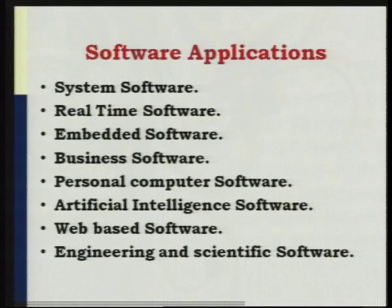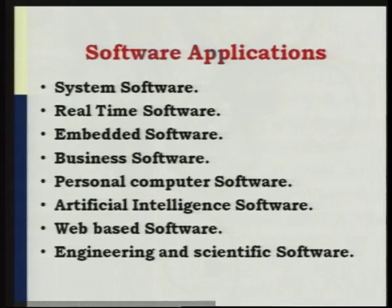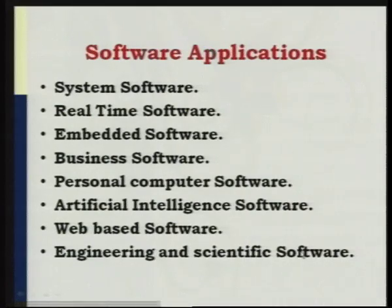Some applications of software include system software, real-time software, embedded software, business software, personal computer software, artificial intelligence software, web-based software, and engineering and scientific software. For engineering and scientific software, examples include CAD/CAM software. For artificial intelligence software, some gaming applications can be included. These are some examples of application areas where software can be developed.